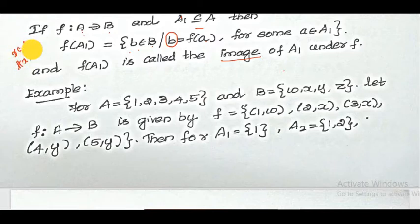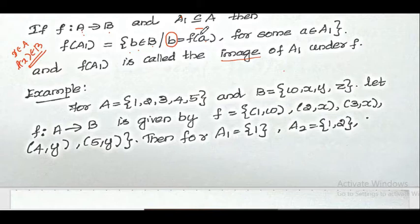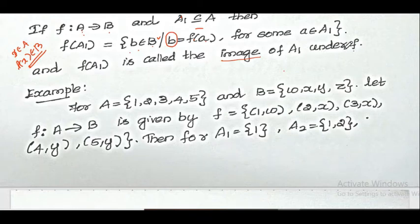In the same way, if A1 is a subset of A, and we define a function where a belongs to A1, then f of a also belongs to the set B. Hence we say that f of A1 is the image of A1 under the function f. Now let's move on to the example.